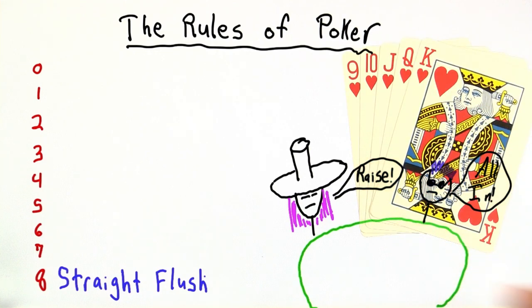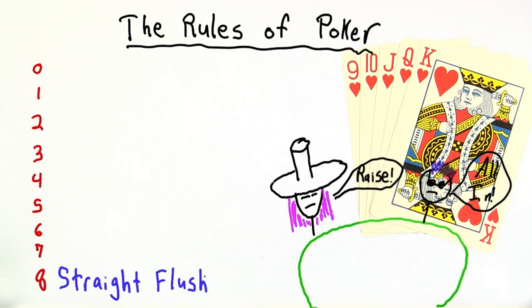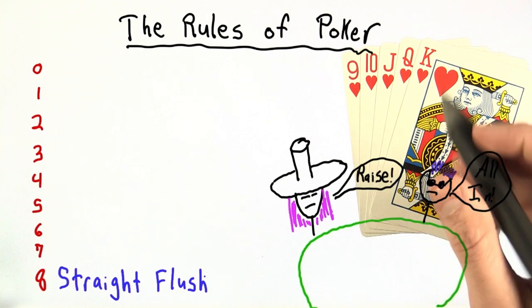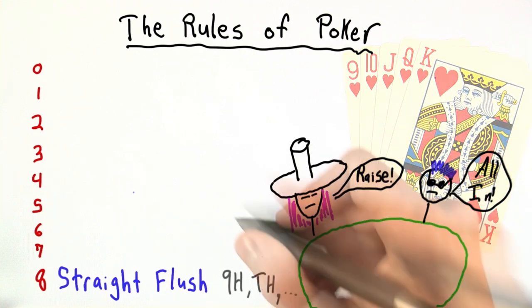If you ever go into a poker forum online, you would see these cards written as nine H, T H, J H, Q H, K H. And that's the system we're going to use here.